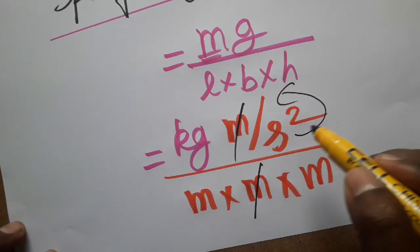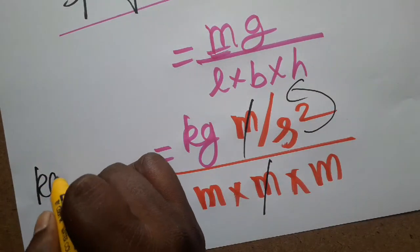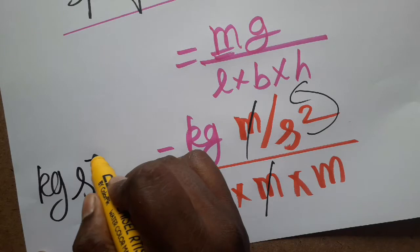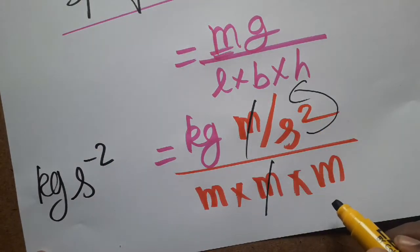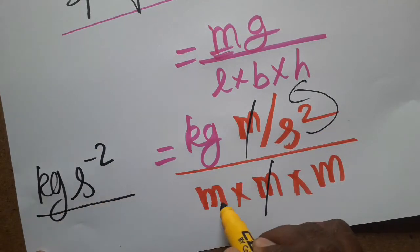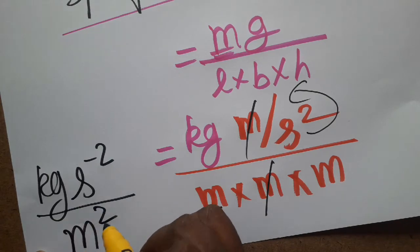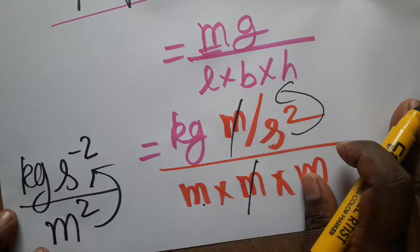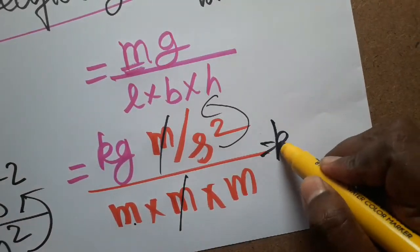Second I am taken as numerator, so we will get kg second minus 2. From denominator, second as numerator becomes second minus 2. Meter meter gives meter square. Meter square also taking as numerator, finally I will get kg.